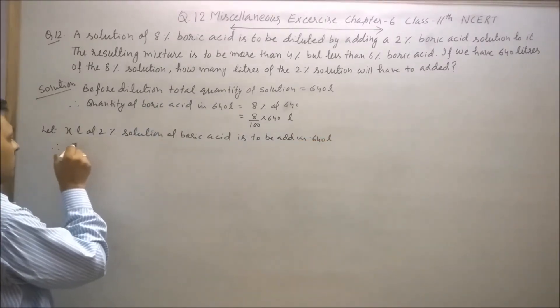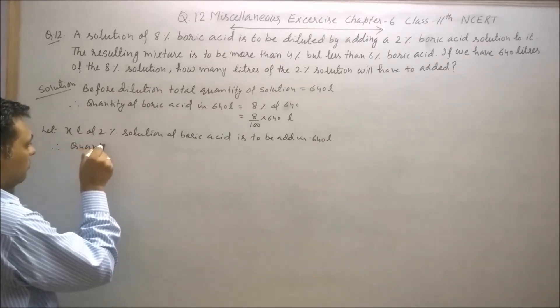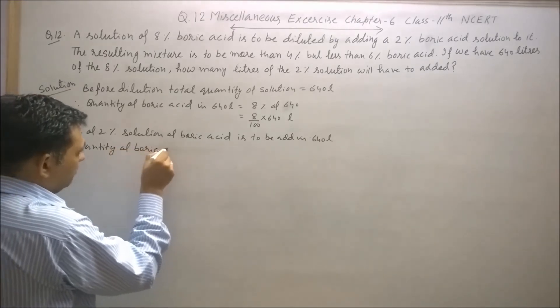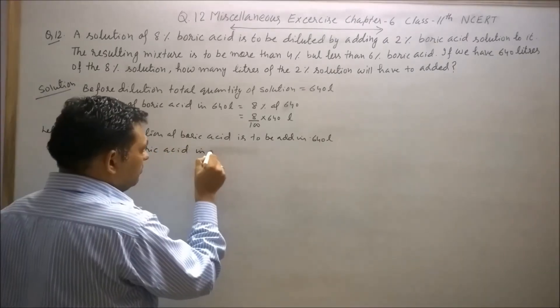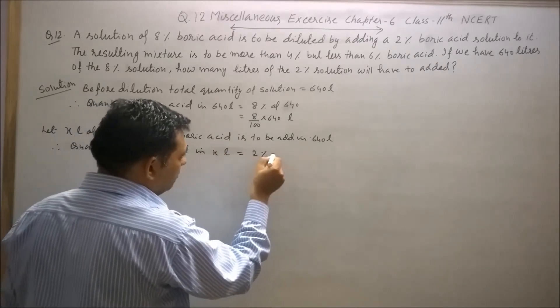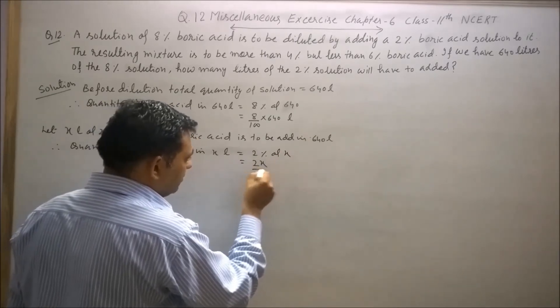Therefore, quantity of boric acid in x liters will be equal to 2% of x, which means 2x by 100.